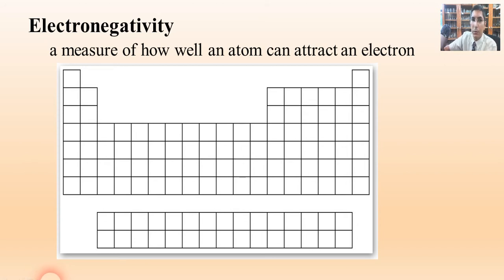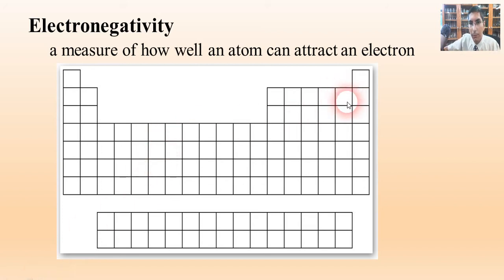You might remember this from first year chemistry. Electronegativity is essentially a measure of how well an atom can attract electrons. Some atoms are very good at attracting electrons — examples like fluorine and chlorine — and then some atoms will hardly ever attract an electron, like the metals on the left side of the periodic table.